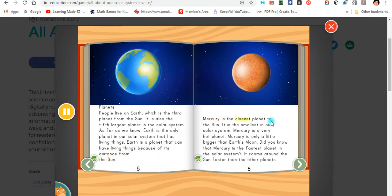Mercury is the closest planet to the sun. It is the smallest in our solar system. Mercury is a very hot planet. Mercury is only a little bigger than Earth's moon. Did you know that Mercury is the fastest planet in the solar system? It zooms around the sun faster than the other planets.